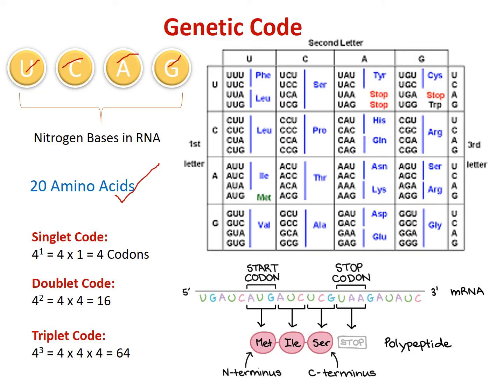We have 20 amino acids. If each single letter codes for one amino acid, the four letters can code for a maximum of four amino acids — not sufficient. So what about a two-letter code? By permutation and combination of two letters from four, you can form a maximum of 16 codes — still not enough for 20 amino acids.